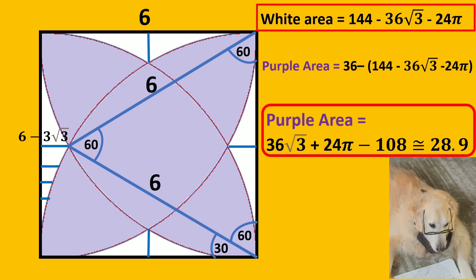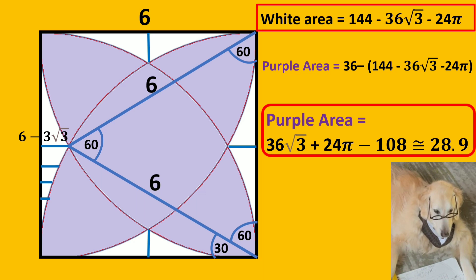Now we are very close to the answer. All we have to do is subtract the white areas from the square. So the answer is 36 times square root of 3 plus 24π minus 108, approximately equal to 28.9.